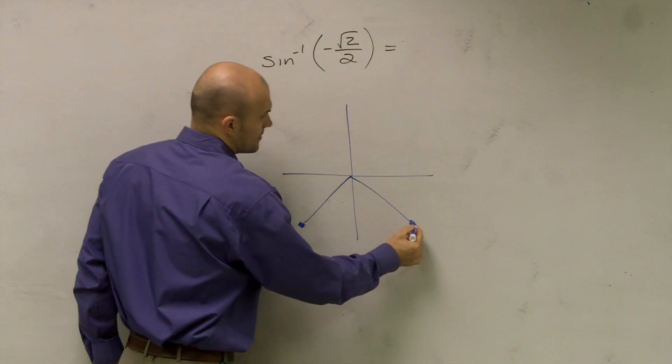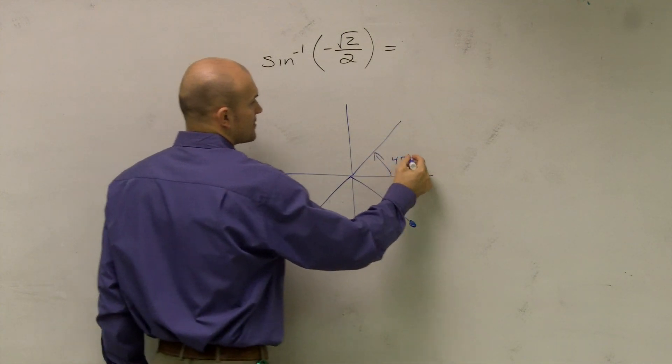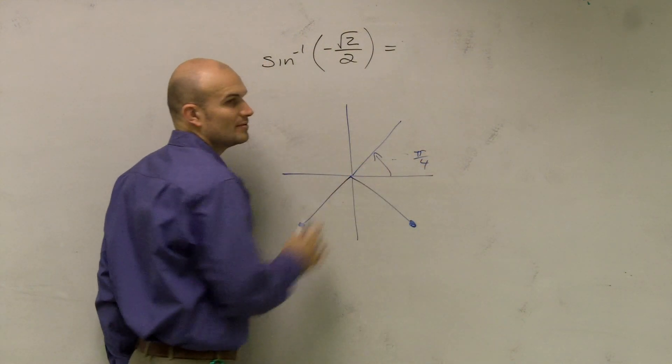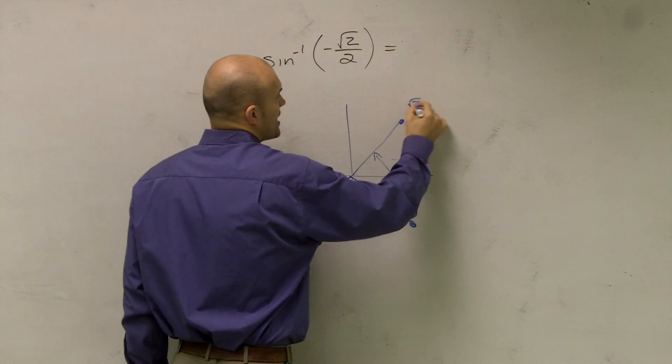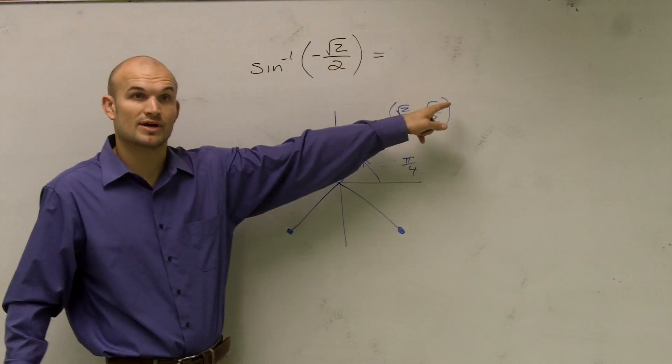We notice that there's pretty much two points, right? We know that our original point, which is 45 degrees, or let's just do it in radians, π/4, is going to be √2/2, √2/2. But that is when your y is positive, right?